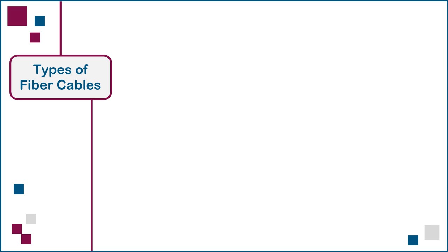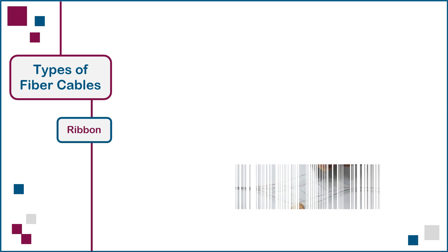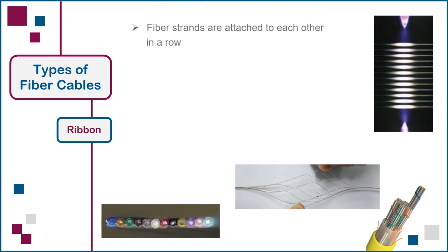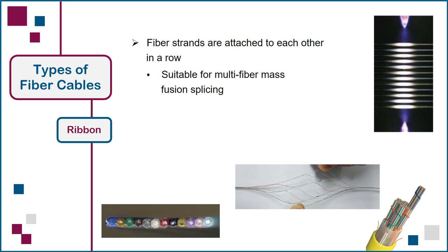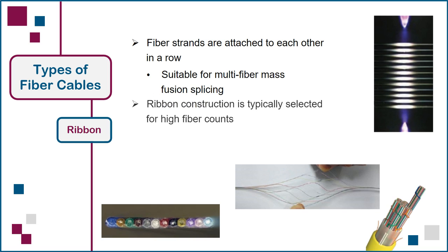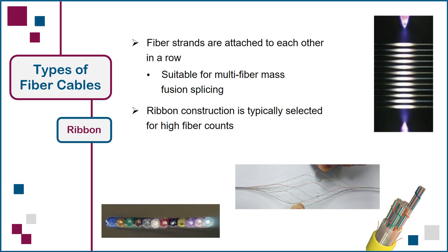The third type of cable construction is ribbon, where the fiber strands are attached to each other in a row, creating a flat or pliable strip of fibers suitable for multi-fiber mass fusion splicing, as shown here. The ribbon construction is typically selected for high fiber counts, all the way up to 6912 strands in a single cable. Note that the highest densities numbering in the thousands are typically associated with data center and service provider facilities.